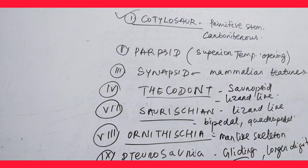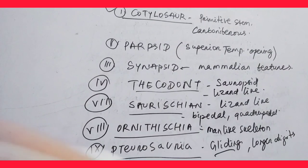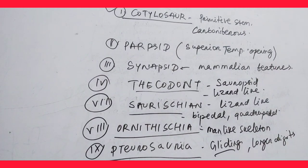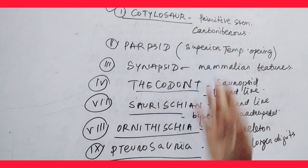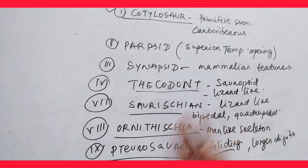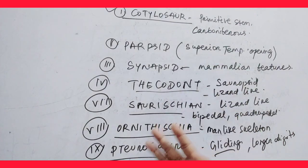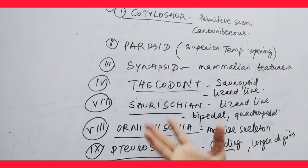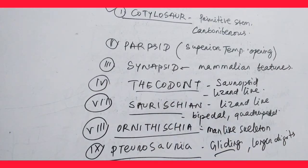So these are all about the ancestral forms of reptiles. We have already discussed about origin, evolution, and adaptive radiation. Thank you all.